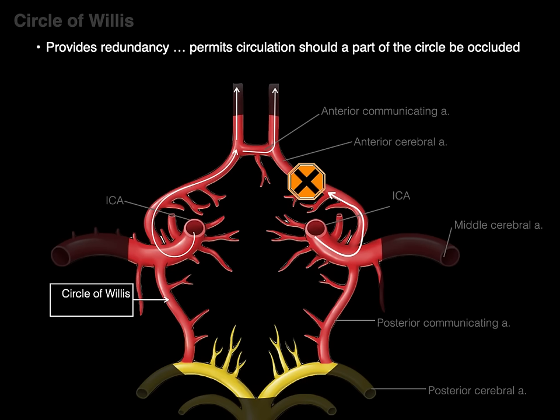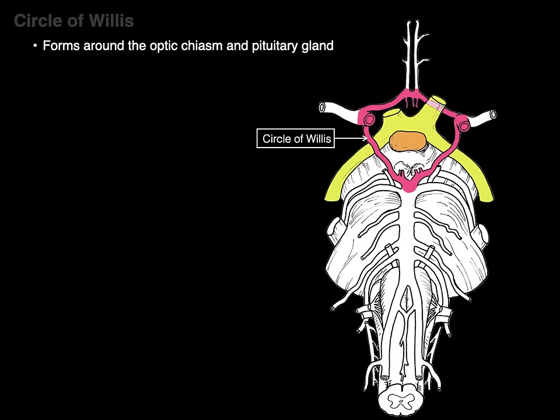If you go outside the circle, those terminal branches become end arteries — block them and you get an ischemic stroke. But blockage within the circle of Willis allows for this redundancy. The circle of Willis is formed around the optic chiasm and pituitary gland. There, the circle of Willis in red surrounds the optic chiasm in yellow — the cross formed by our two optic nerves — and also the pituitary gland and infundibular stalk.